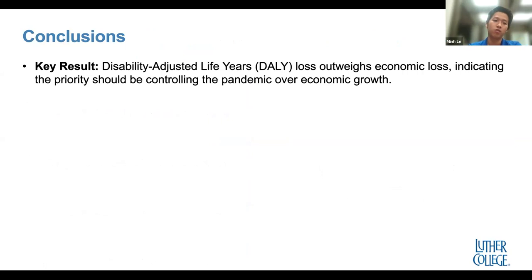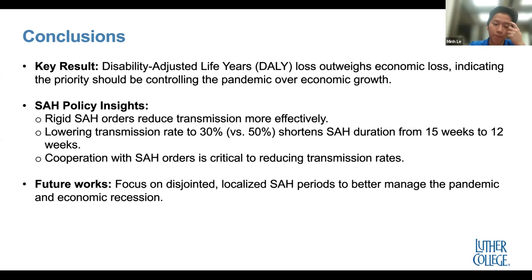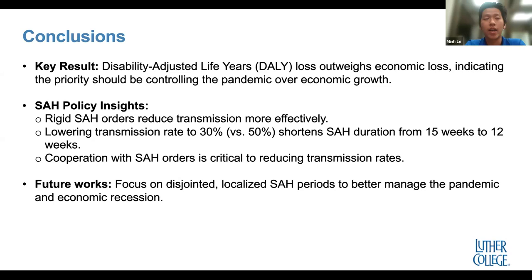To wrap up the key results: in most simulations, the DALY loss outweighed the economic loss, meaning the priority should be controlling the pandemic over economic growth — while still keeping economic impacts in mind. Regarding stay-at-home order policy, the more rigid the orders are, the more effective they are at reducing transmission rate. For example, if the transmission rate is reduced to 30% instead of 50%, the duration of the stay-at-home order drops to 12 weeks instead of 15. So if governments issue more rigid orders and people are cooperative, we end up better off — shorter orders, fewer deaths, and a better economy.